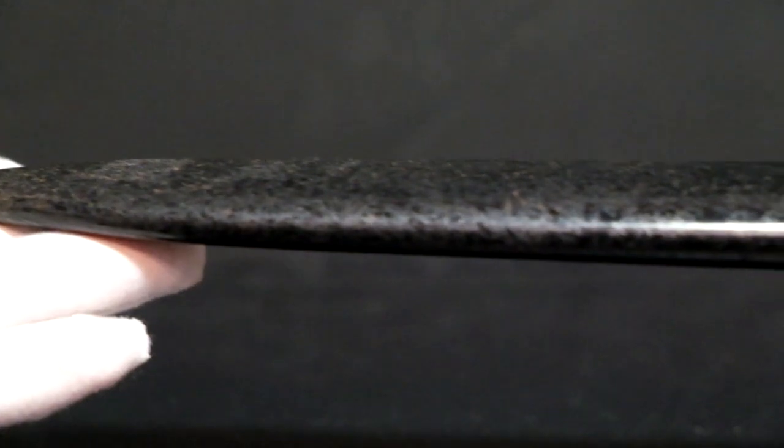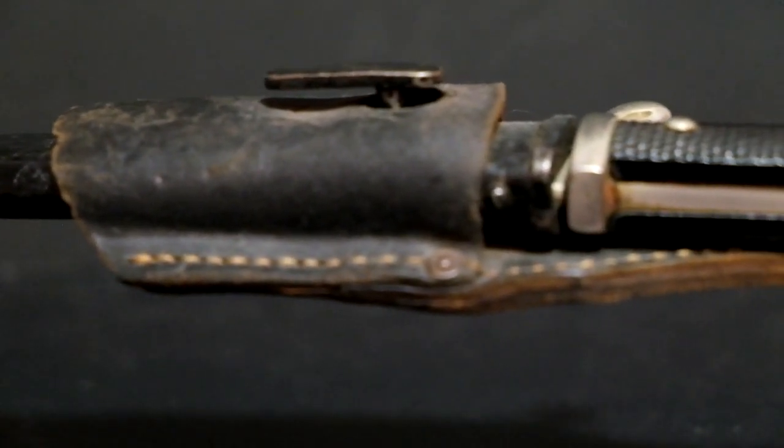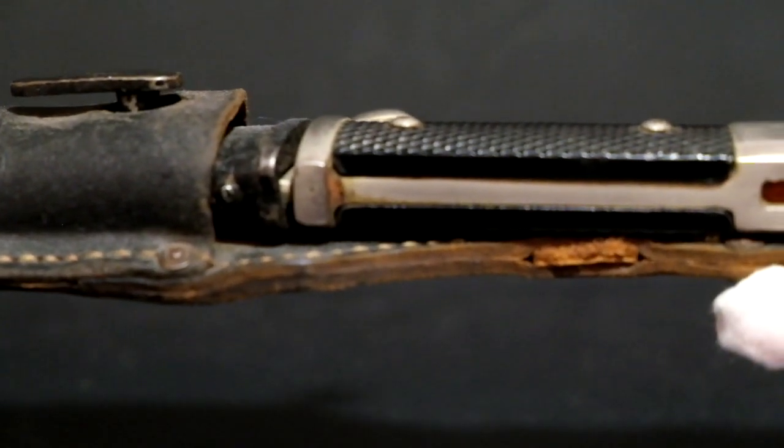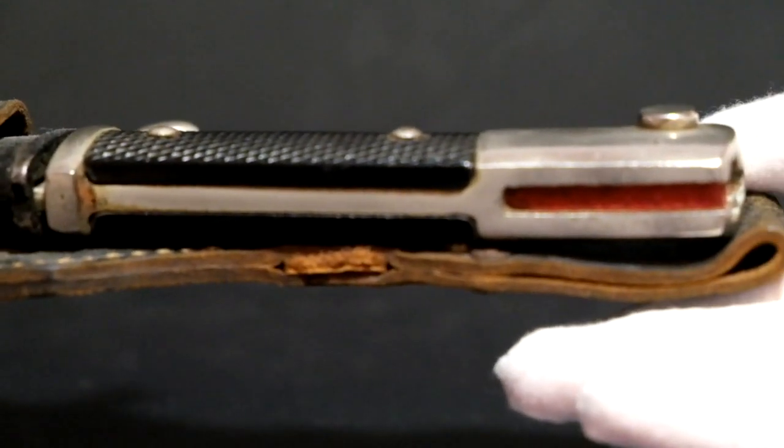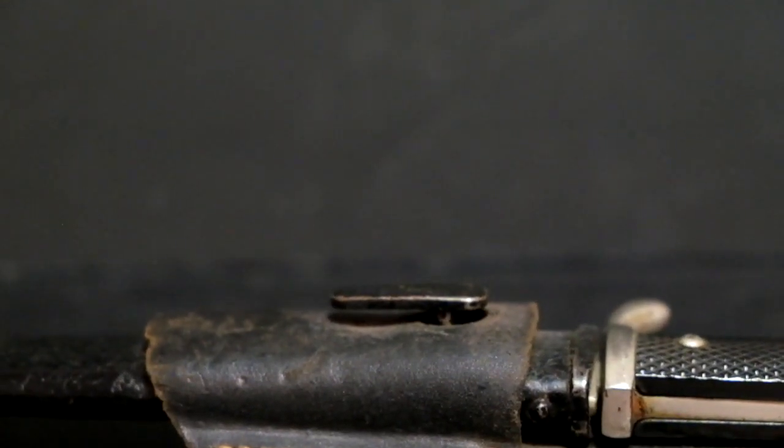WWII German Dress Bayonets with their sheath and matching frog sell for about $175 to $300 on the military market. Examples without frogs can sell for about $100 to $150.